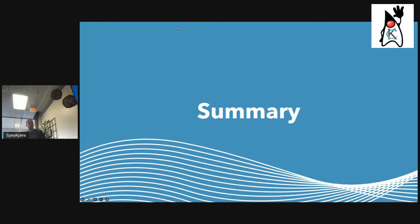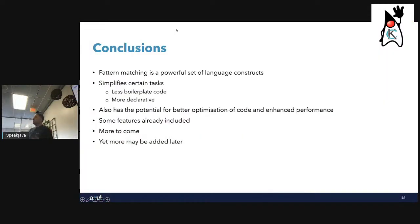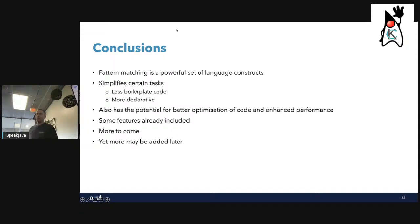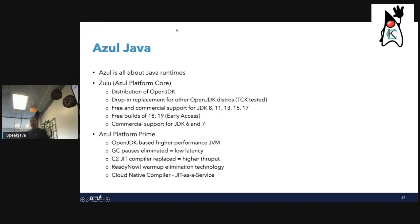To summarize: pattern matching is a very powerful set of language constructs that eliminates boilerplate code and gives interesting new ways of doing things, making code more declarative. Even though much looks like syntactic sugar, there are situations where it can improve underlying performance. Many features are already available; some are coming in JDK 19 and JDK 20, with more further out.